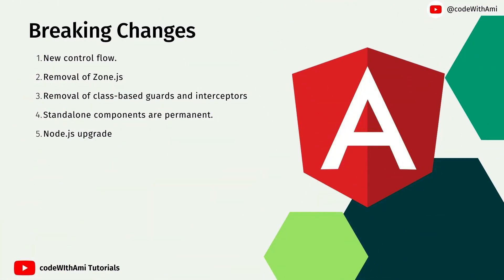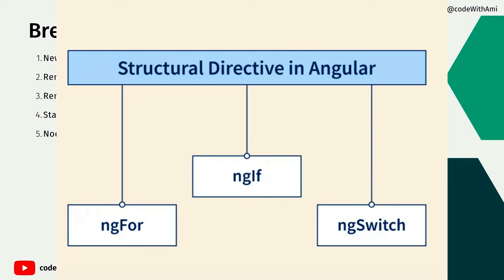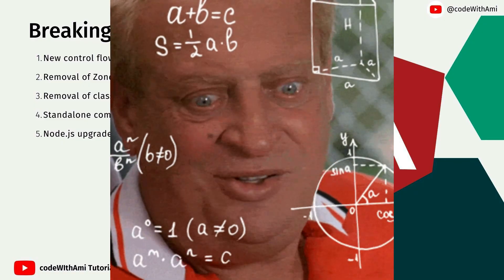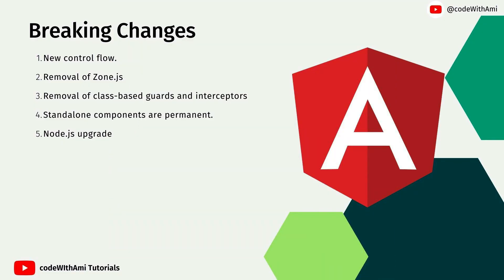Now let's talk about the breaking changes in Angular 17. The first is the new control flow — it's about adding a new syntax for all the structural directives we have in Angular: ngIf, ngSwitch, ngFor, and so on. The problem is: what will happen to existing code when you migrate to Angular 17? We don't know yet whether upgrading will automatically update the code you wrote with structural directives, or if you will have to do it manually.